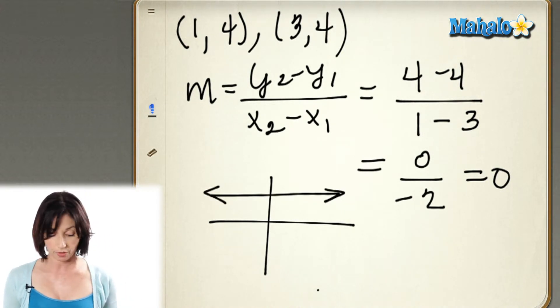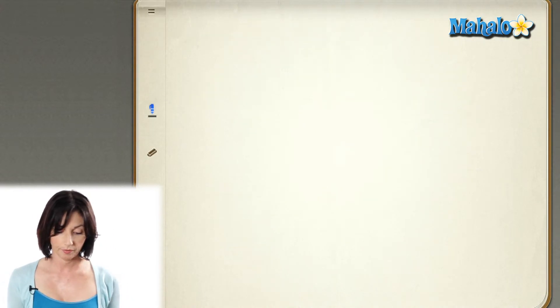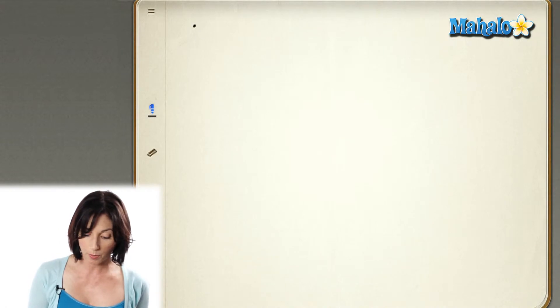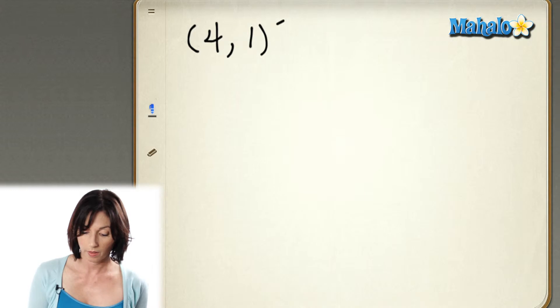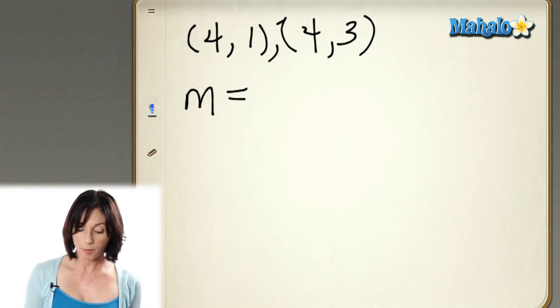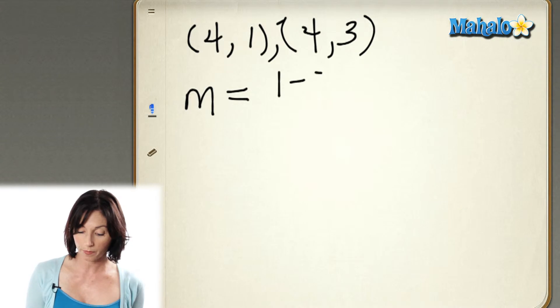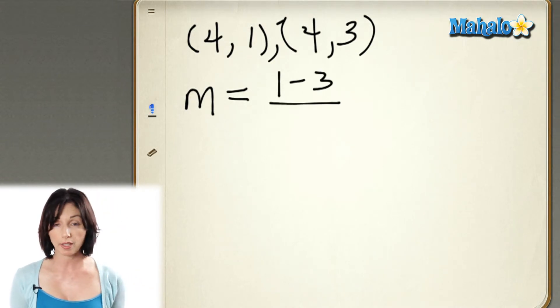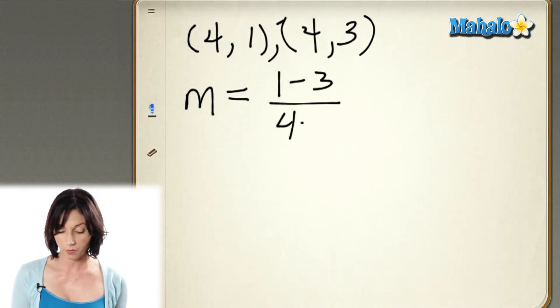So let's look at another example. Let's say we have the points (4,1) and (4,3). Again, I'm just going to calculate the slope as normal. I'm going to take the difference in my y-coordinates, so 1 minus 3, over the difference in the x-coordinates, 4 minus 4.